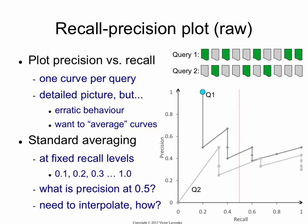The first document is relevant, so precision is 100%. Precision is on the y-axis, and there are 1, 2, 3, 4, 5 relevant documents, so recall is 20% — one out of five documents found at rank 1. The next document is non-relevant, so recall stays at 20% and precision drops to 50%. The next document is relevant, so precision goes up to two-thirds and recall up to 40%, and so on. That's how you get a recall-precision curve from this ranking.